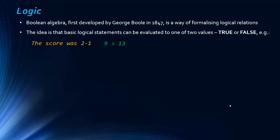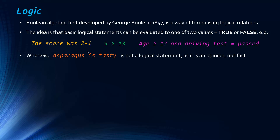'9 is greater than 13' — that's false, we can say that definitively without any other background information. Another example involves whether you have a proper driving licence: you need to be greater than or equal to age 17 and you need to pass your driving test. That's two conditions using one Boolean operator. A non-logical statement would be 'asparagus is tasty' — it's an opinion, not a fact we can test.